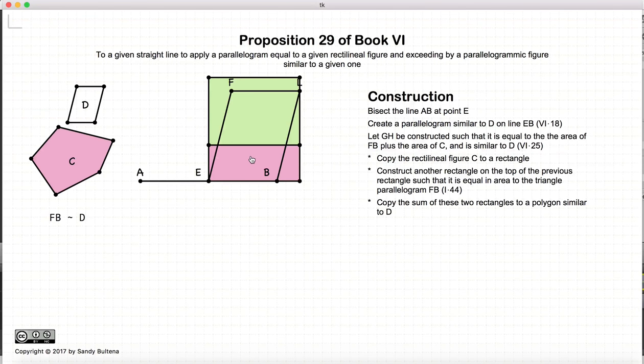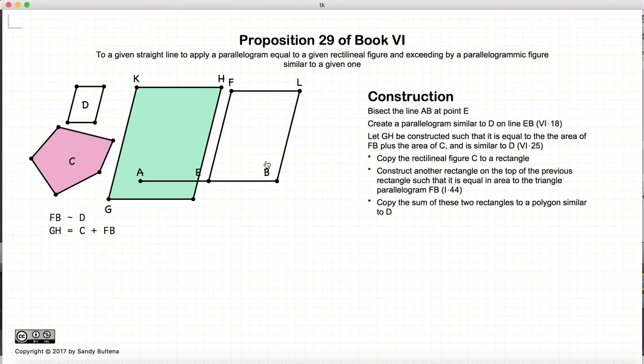And I'm going to copy it to a polygon of shape D, but equal in area to this whole thing. So now we have GH is equal to the area of C plus the area of FB.